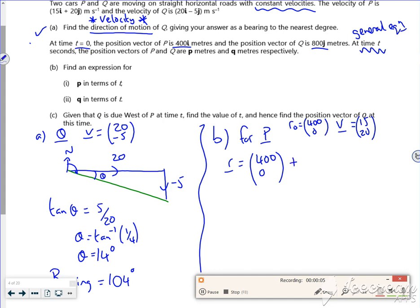So plus Vt, we've got 15, 20t, so R would be 400 plus 15t and 20t. This is for P, just put a little subscript for P there.